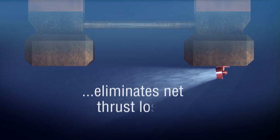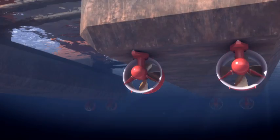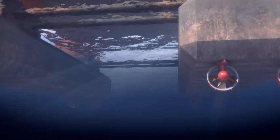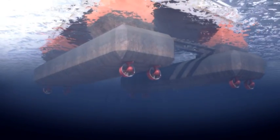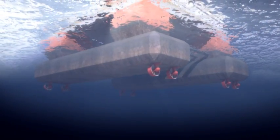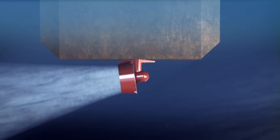Modern dynamic positioning systems utilize sophisticated control systems to mitigate thruster operation that may create undesirable inflow conditions for nearby thrusters. It should be noted that the 7 degree tilted axis design substantially reduces the potential for adverse inflow conditions.